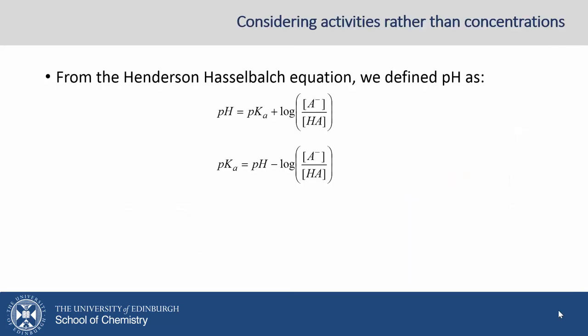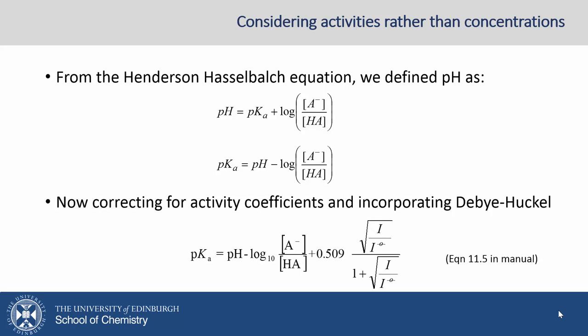Let's revisit this idea of using activities rather than concentrations. This is detailed more fully in the manual, but let's just summarise here. From the Henderson-Hasselbalch equation, we define pH as pH is pKa plus log of the ratio of concentrations of conjugate base to acid. If I rearrange this, we get an expression for pKa.